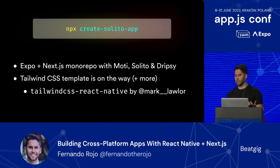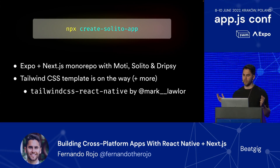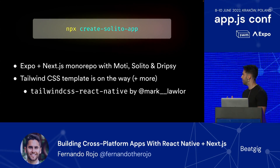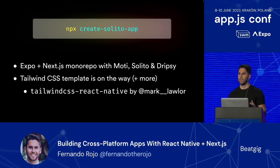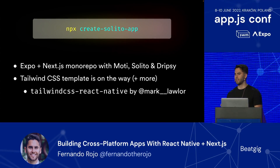Setting up a monorepo with React Native and Next.js is a pretty big pain, so Solito comes with a script to solve this for you. You just run it and you have a fully configured monorepo with an Expo entry point, a Next.js entry point, and all the shared navigation. Over time, we're going to be adding a lot more examples. One that I'm super excited about is a Tailwind CSS React Native one — Mark Lawler has been working on a really exciting library that lets you use pure CSS on web for Tailwind, and then at build time takes strings into style objects on the native side.